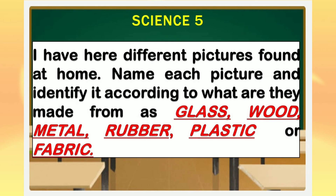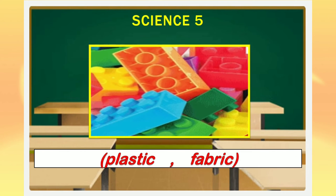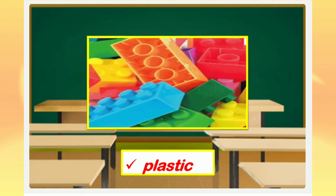I have here different pictures found at home. Name each picture and identify it according to what they are made from — as glass, wood, metal, rubber, plastic, or fabric. Are they made up of plastic or fabric? What is your answer? The correct answer is plastic.